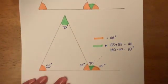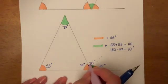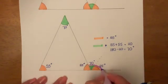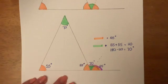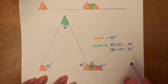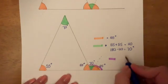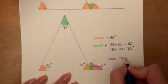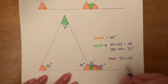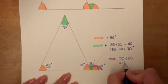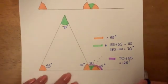So now what I can do is work out this outside angle here. Because remember we've split that up. I've labeled that one as a purple angle. So the purple angle is the 70 plus the 55, which is 125 degrees.